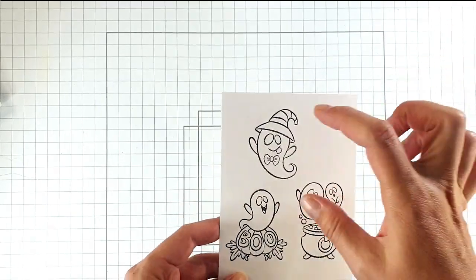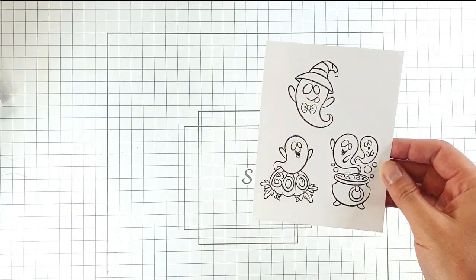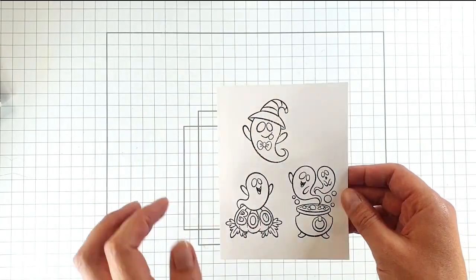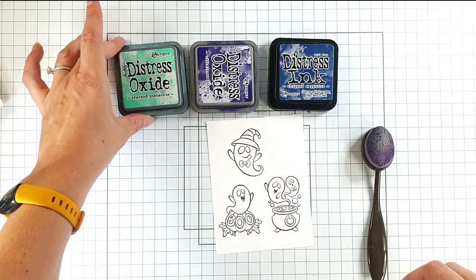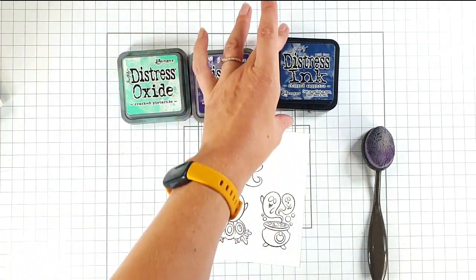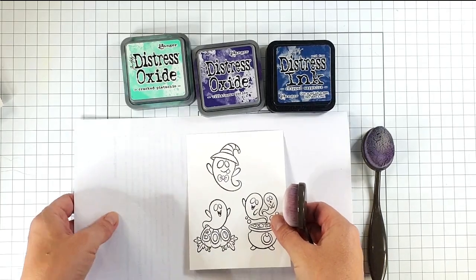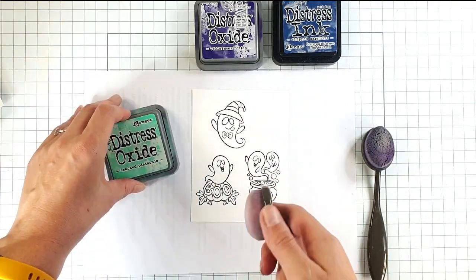But then I'm actually going to cut out some more ghosts and pop them up. So we're going to do some blending, but we can blend over this no problem. I've got Cracked Pistachio and Villainous Potion Distress Oxide inks, and I've got this Distress Ink in the Chipped Sapphire.